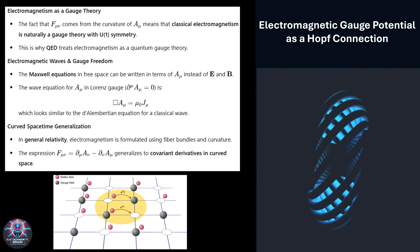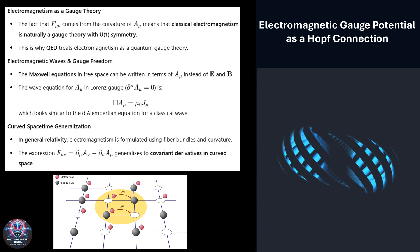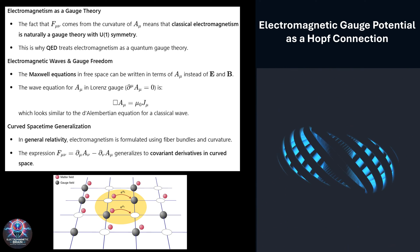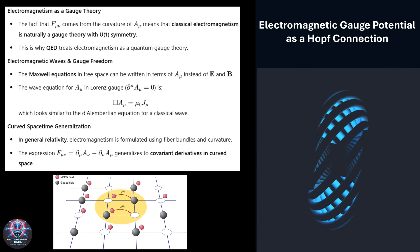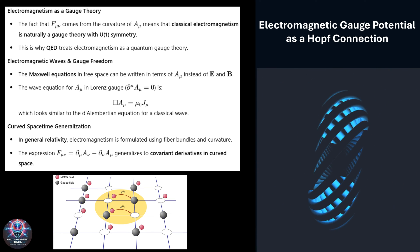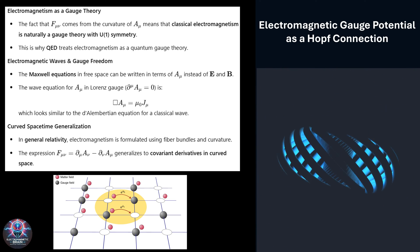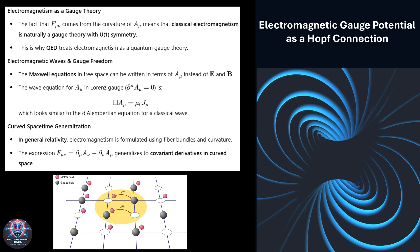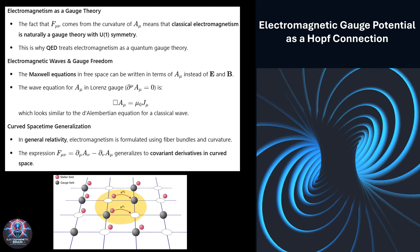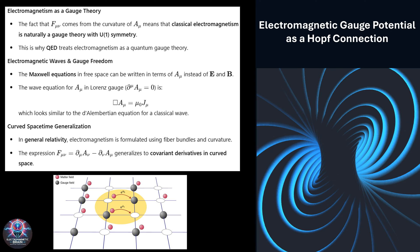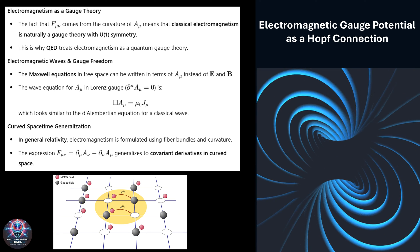There is an even richer way to see all of this, through a beautiful structure in topology called the Hopf fibration. This mathematical concept describes how one space can be fibred over another, and it turns out that electromagnetism fits naturally into this picture. The electromagnetic gauge potential, rather than being just an abstract quantity, can be seen as a Hopf connection, giving us a way to view electromagnetism as part of a deeper geometric structure.